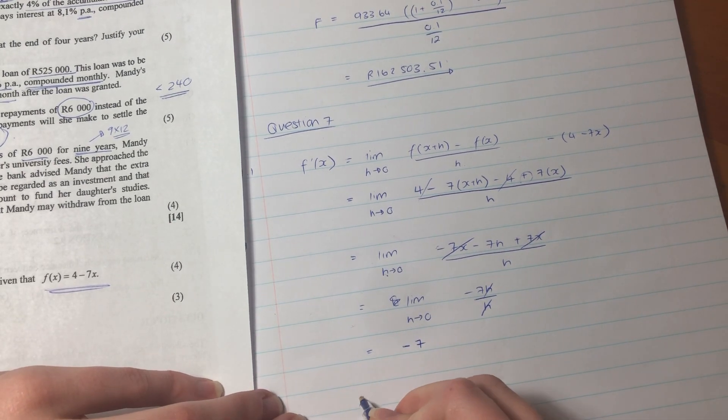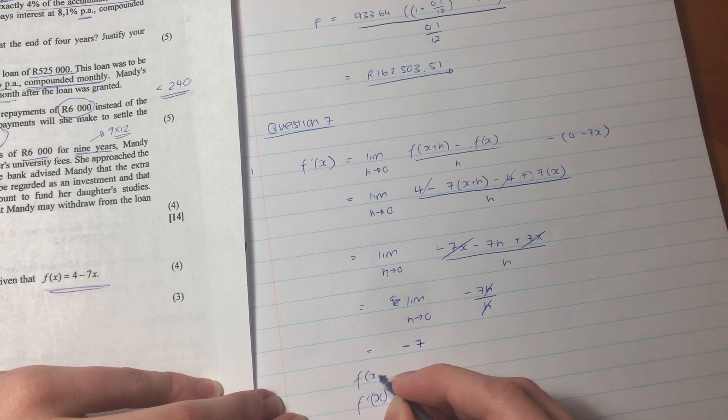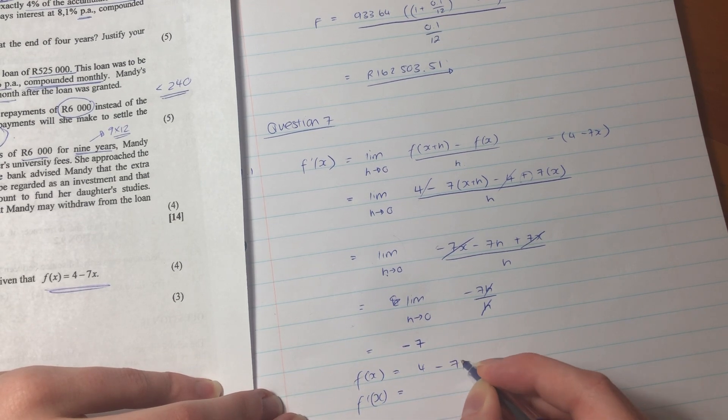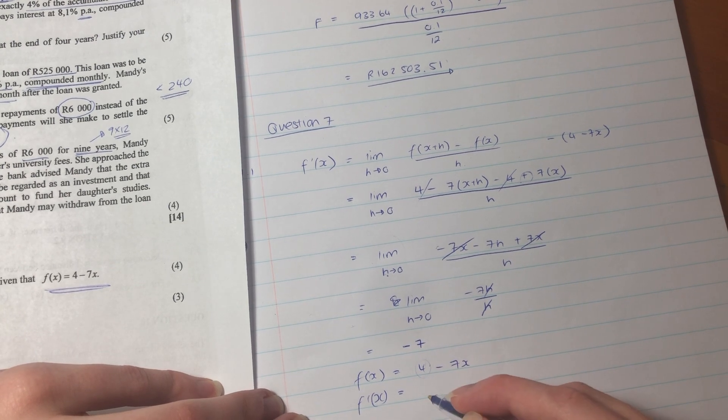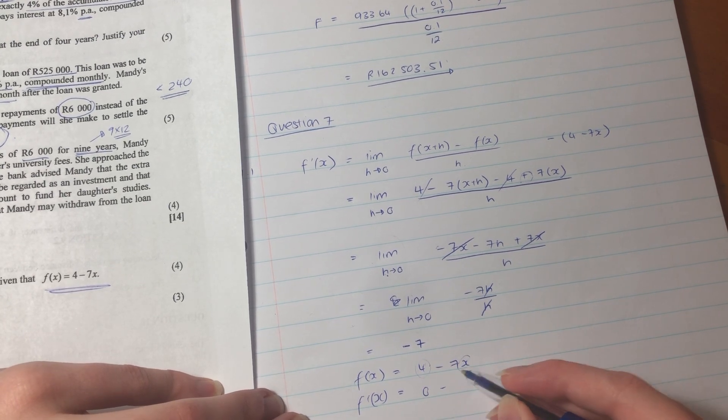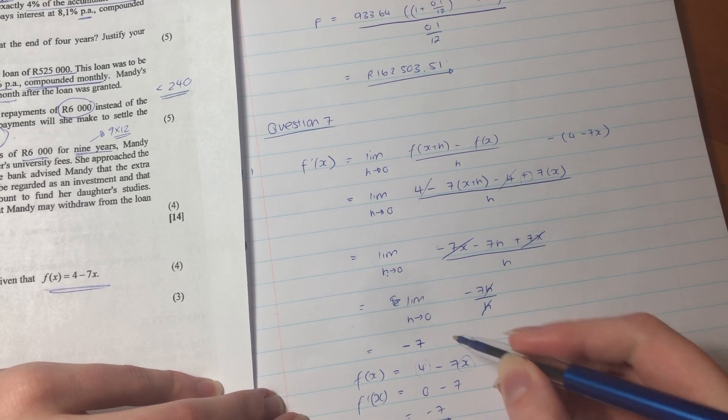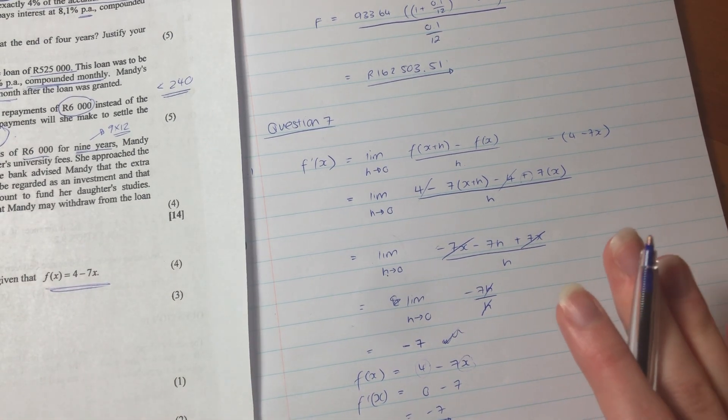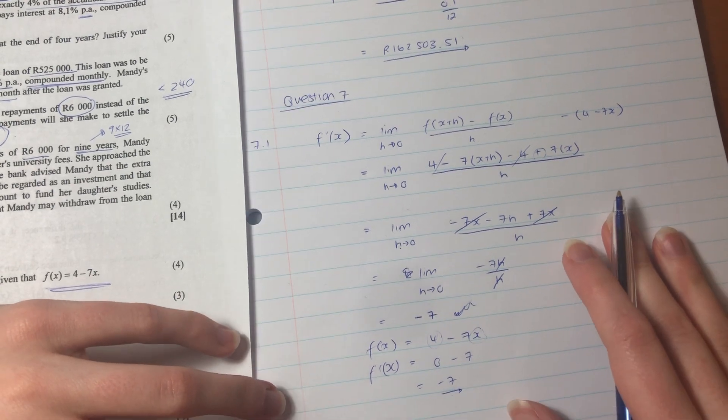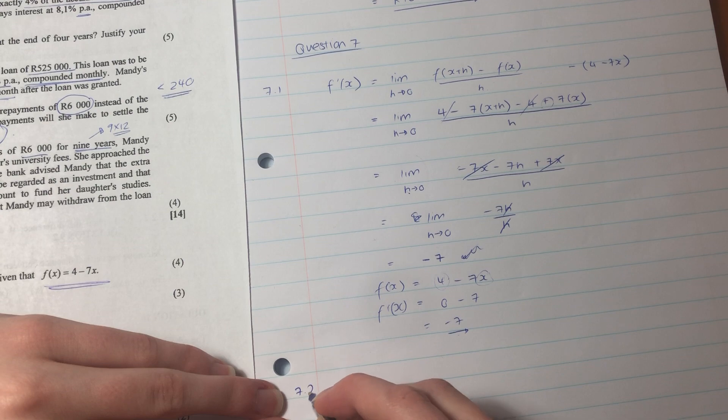If you want to check that, let's just do the shortcut. So we know if f of x equals 4 minus 7x, the derivative, derivative of a constant is 0, derivative of x is just the coefficient here, so it would be negative 7. So this is our little check. We know that we are correct. Obviously don't mark your own work in your exam, but we know that it's correct. We've tested it.